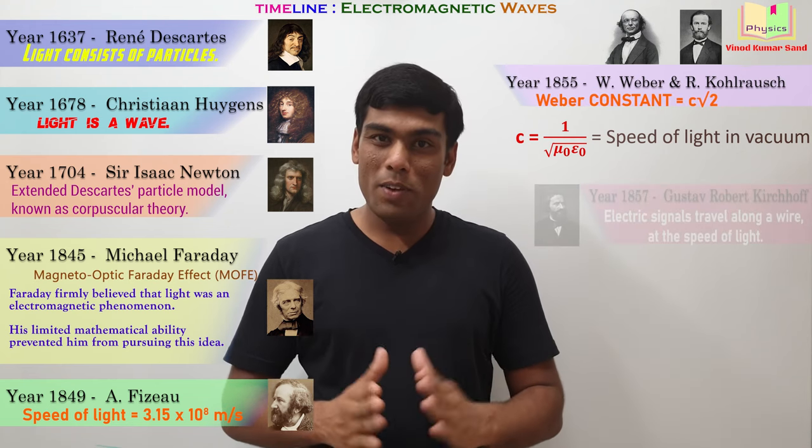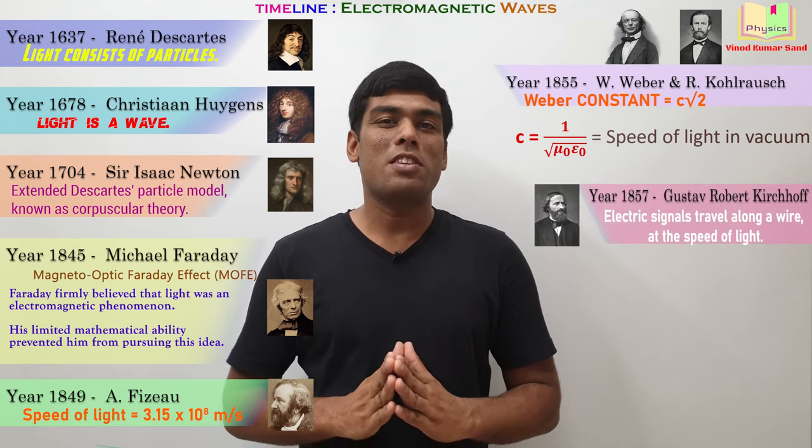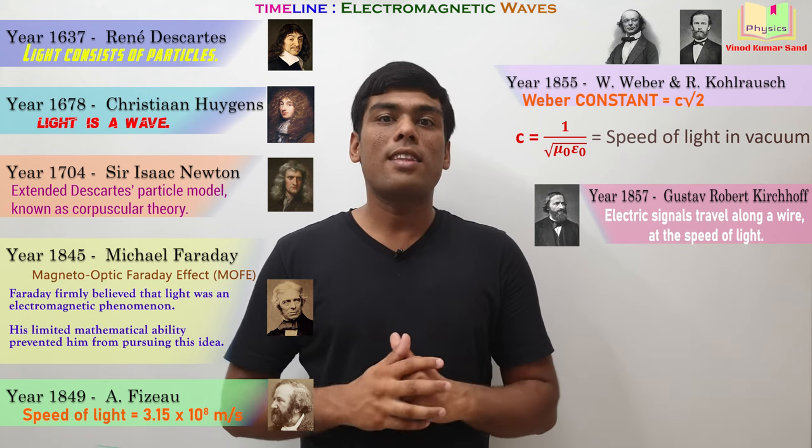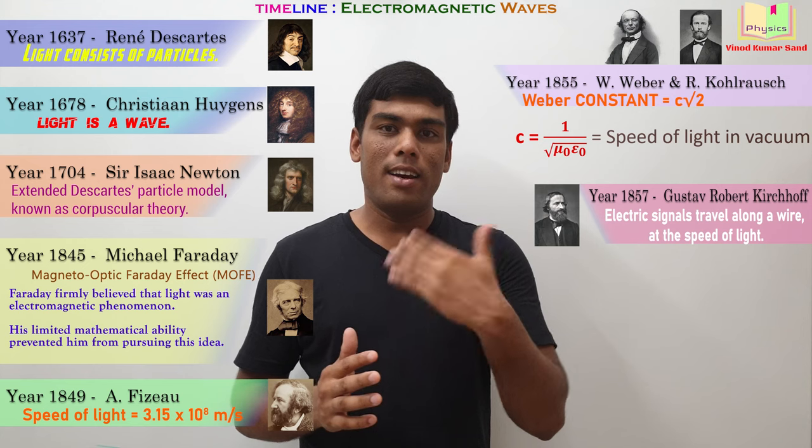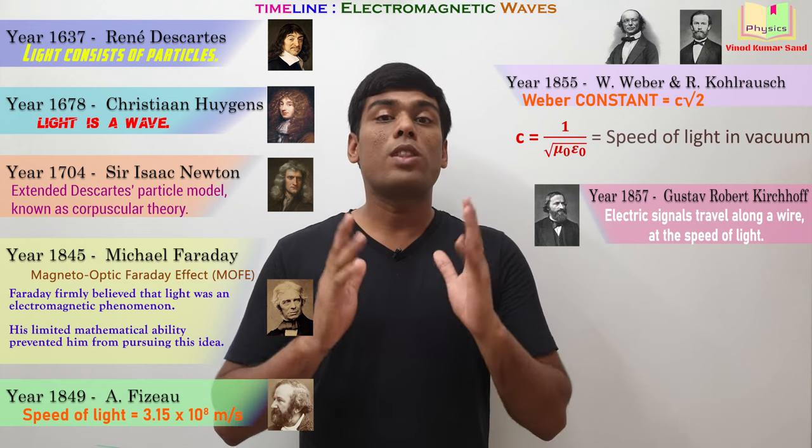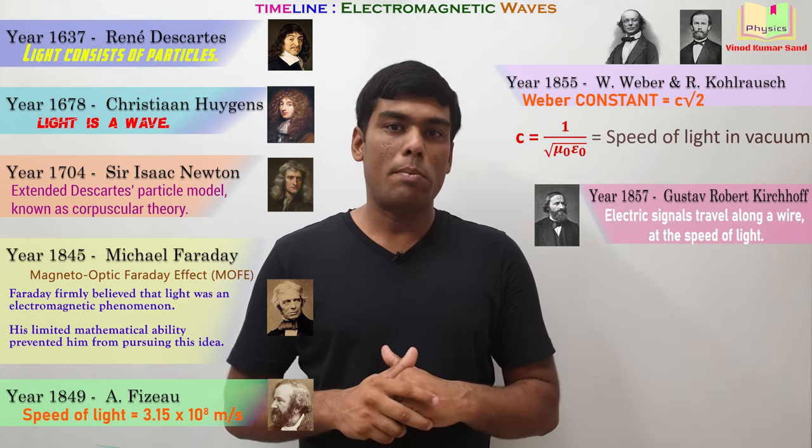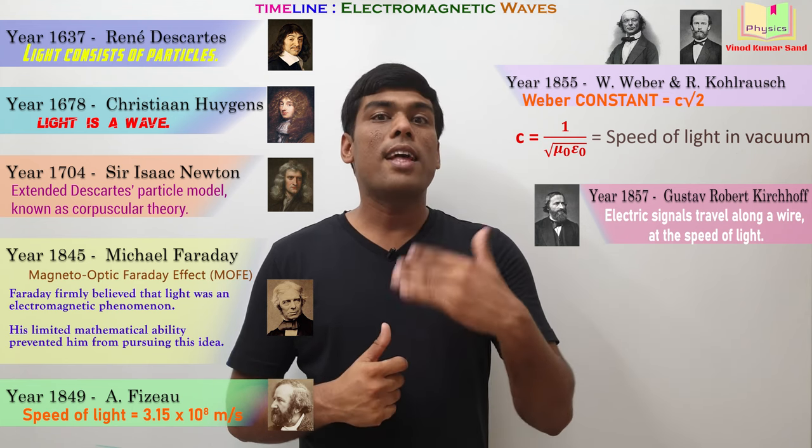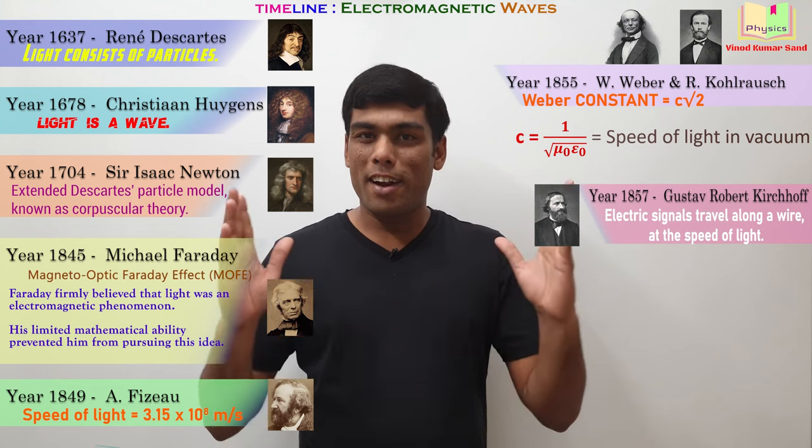Then, in year 1857, the famous German physicist Gustav Robert Kirchhoff established that the electrical signals in a conductor travels with the speed of light. He used Weber's constant and did few calculations. Then, there comes the year 1861.